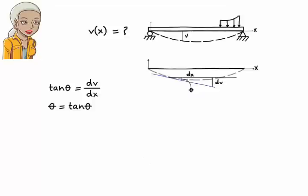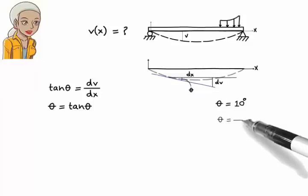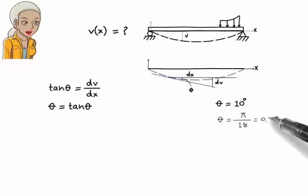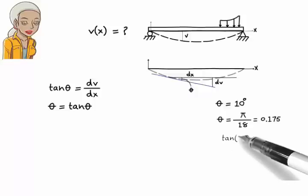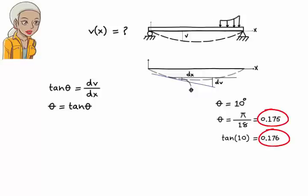But is this a reasonable approximation? Let's put it to the test. Say theta is 10 degrees. In radians, this is equal to π over 18, or 0.175. Tangent of 10 degrees is 0.176. As you can see, the two numbers are almost identical.